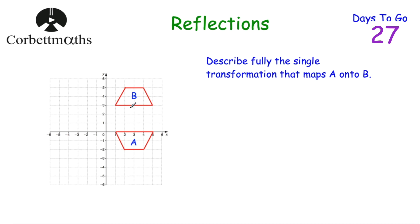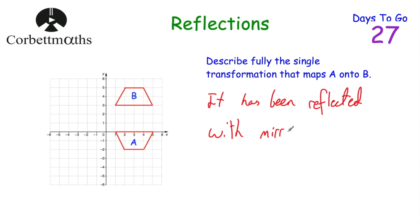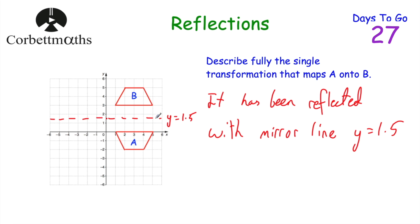Now let's look at describing a reflection. We've got two quadrilaterals — both trapezoids — and we've been asked to describe fully the single transformation that maps A onto B. First, we state it's a reflection. Then we identify the mirror line: it's a horizontal line in the middle of the two shapes, passing through a height of 1.5. All points on that line have a y-coordinate of 1.5, so the equation is y = 1.5. Therefore, A has been reflected in the mirror line y = 1.5.